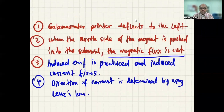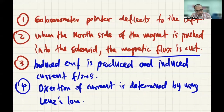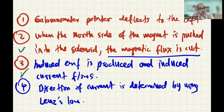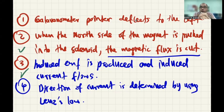The pointer deflects to the left because when the north pole of the magnet is pushed into the solenoid, the magnetic flux is cut, an induced EMF is produced, and an induced current flows. The direction of current is determined using Lenz's law. Always remember these three come together: magnetic flux is cut → induced EMF is produced → induced current flows. What causes the magnetic flux to be cut depends on the situation. The direction of induced current is determined using Lenz's law or Fleming's right-hand rule.